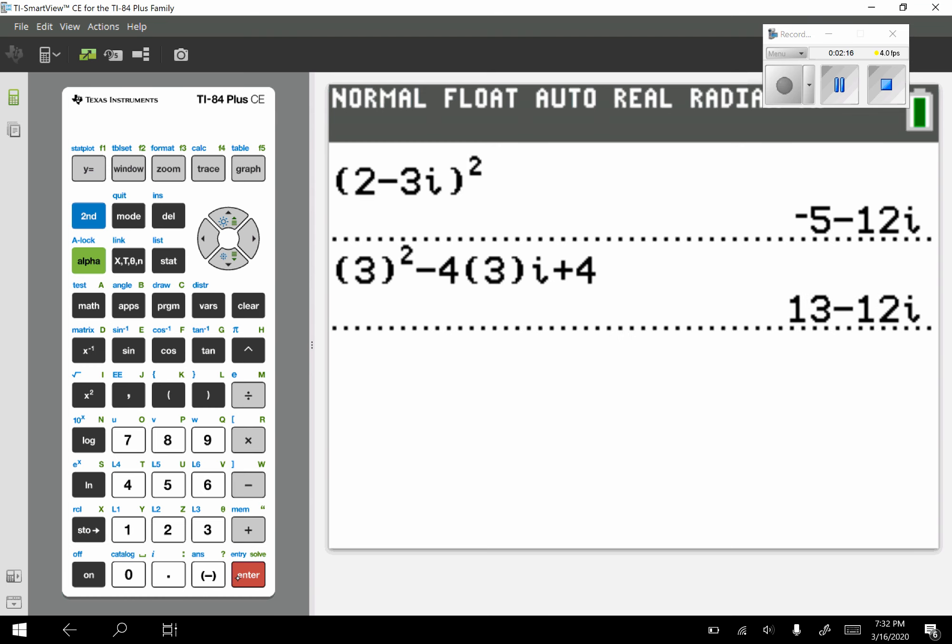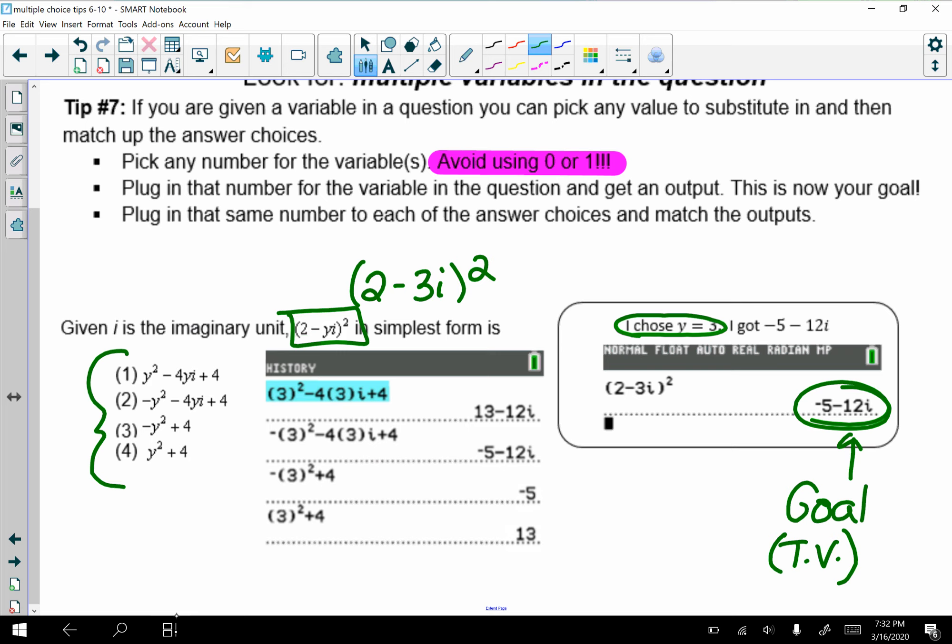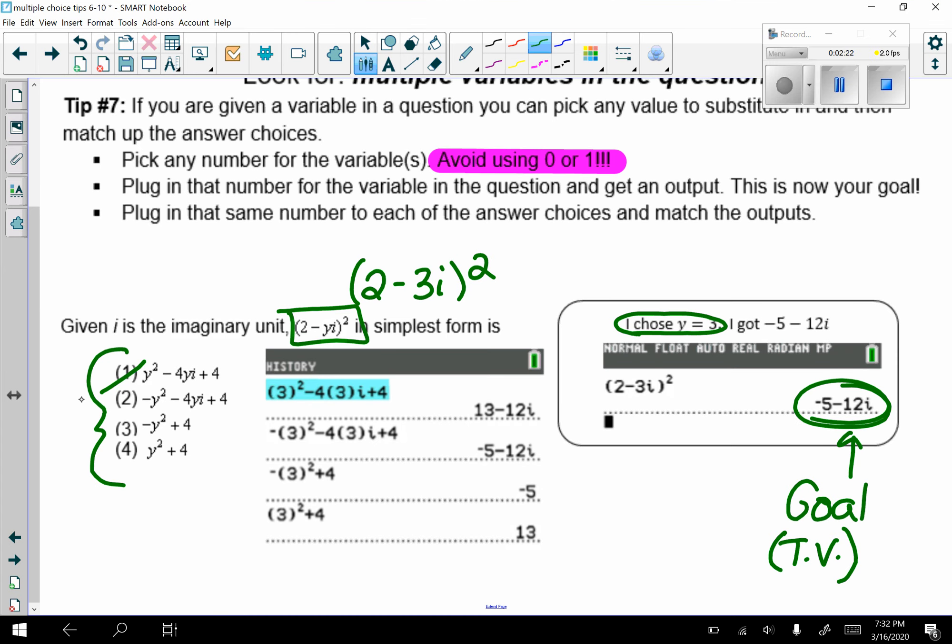I did not get my target value, so I'm going to eliminate choice 1, and then I'm going to repeat this process until I get my goal. If you see here in choice 2, that was my goal, so my answer would be choice 2.